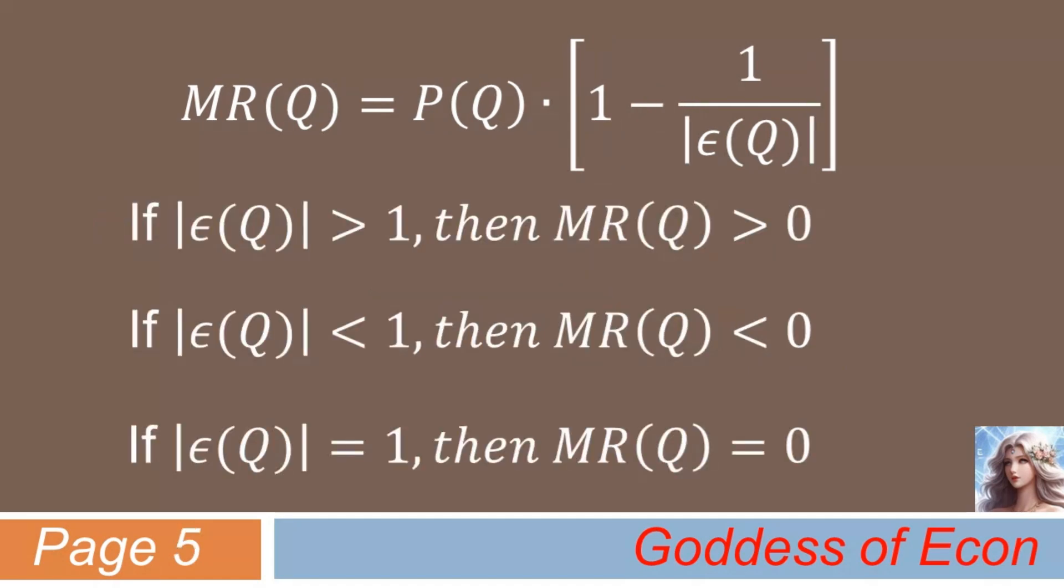Okay, now that we have this MR equation, we can now clearly see its linkage with the price elasticity of demand. From the equation above, we can see that if the absolute value of epsilon is greater than 1, MR is greater than 0, that is, a positive number. On the other hand, if the absolute value of epsilon is less than 1, MR is less than 0, that is, a negative number. And where epsilon is exactly equal to 1, we have MR equals 0.